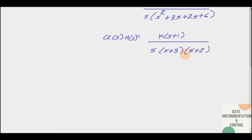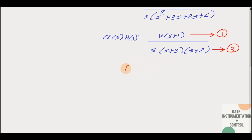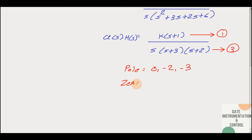The total number of poles is 3, with pole values at 0, −2, and −3. The number of zeros is 1, with the zero value at −1.